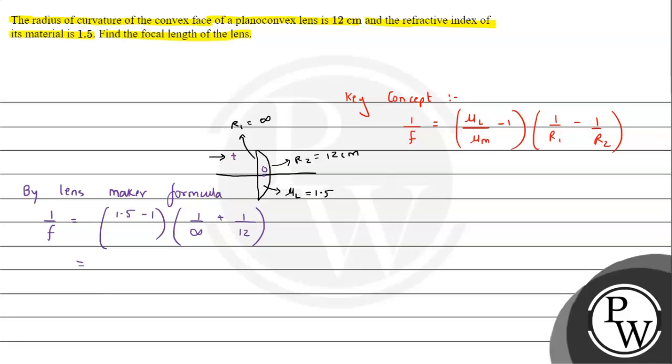Now if we solve this, it will be 0.5, and 1 by infinity will be 0, and then into 1 by 12.